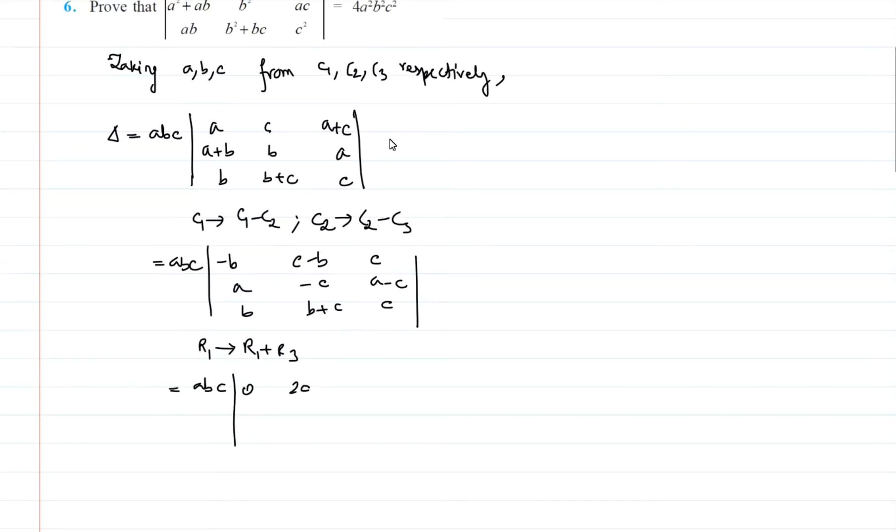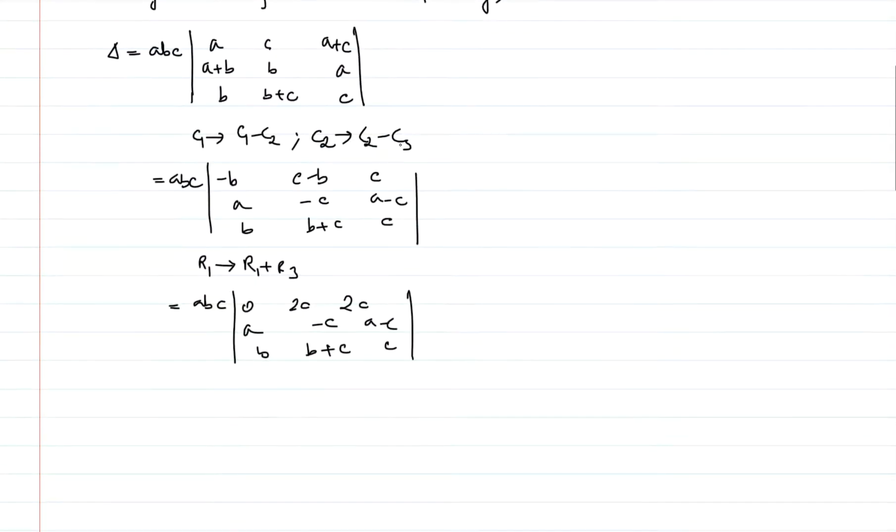0, 2c, 2c, a-c, a-c, b, b+c, c. Now let me take 2c out of first row because that is what seems very easy. So we take 2c from first row.